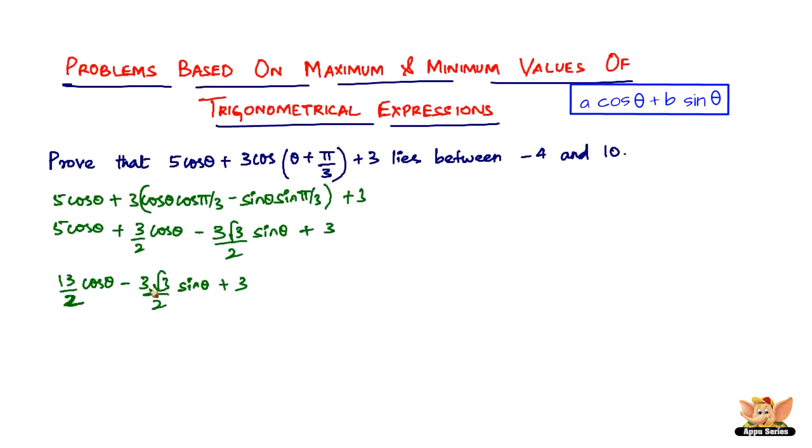Let's start off with the minimum values. So the minimum value is going to be negative of √(a² + b²). So a² is nothing but (13/2)² and then plus b² is (3√3/2)².